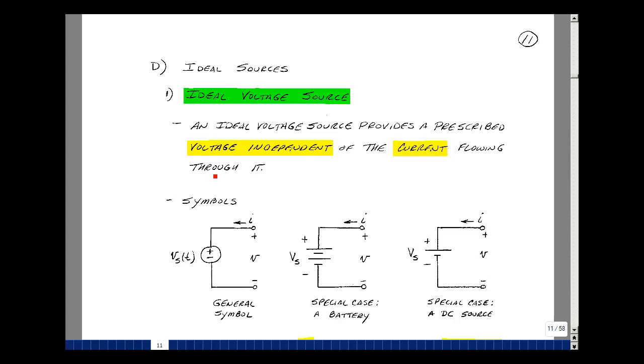An ideal voltage source provides a prescribed voltage independent of the current flowing through it. Here are three symbols for voltage sources. Our first one is a circle with a plus and minus inside. This is our most general symbol for a voltage source. We can label a voltage across the terminals and define the current such that the unit is absorbing power. This is our default definition for anything. But in reality, this is usually going in the other direction—our voltage source generates power. Let's label the value V_s of t along the side here.